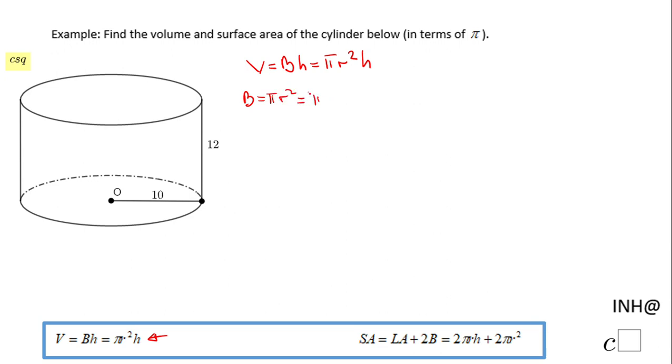That will be π times the radius, which you notice is 10, so 10². That will be π times 100, which is 100π. The area of the base of this cylinder is 100π.